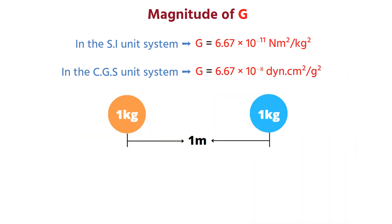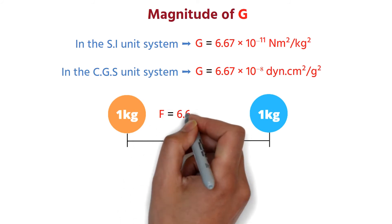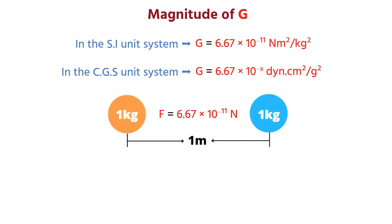That means, if we separate two objects of mass 1 kilogram by a distance of 1 meter, the gravitational force between them will be 6.67 into 10 to the power minus 11 newton.